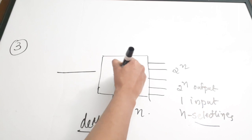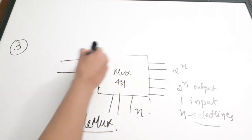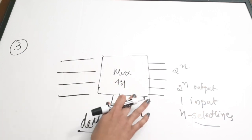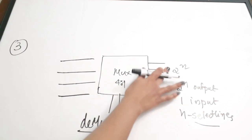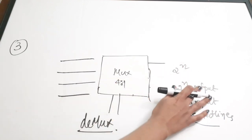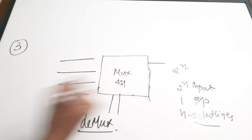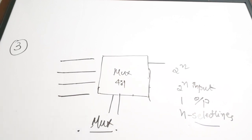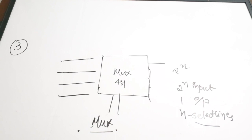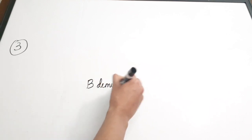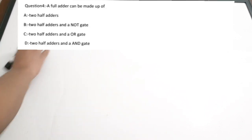For a 4-to-1 multiplexer there are four input lines, two select lines, and one output line. So for a MUX: 2^n inputs, n select lines, one output. The question describes a demultiplexer, so the correct answer is option B — DMUX or demultiplexer.